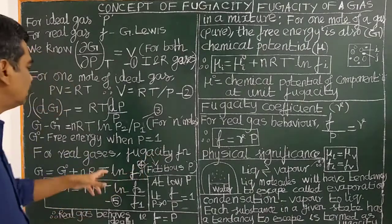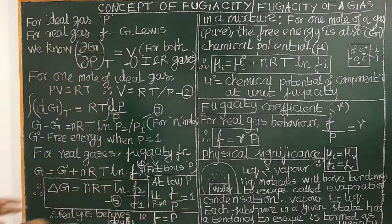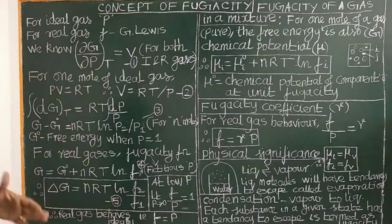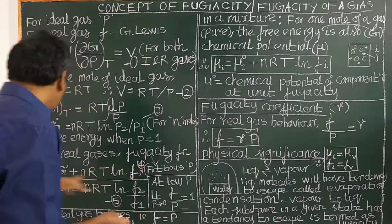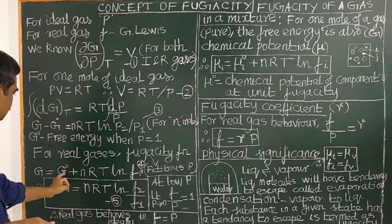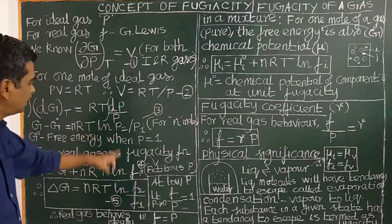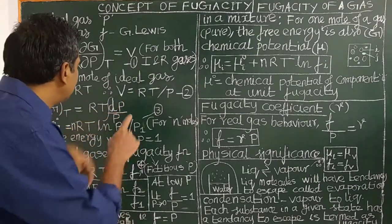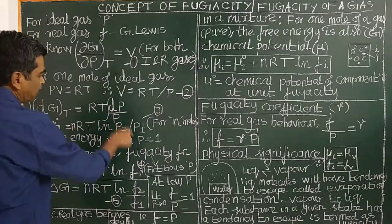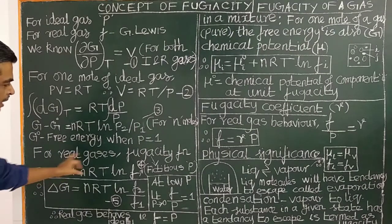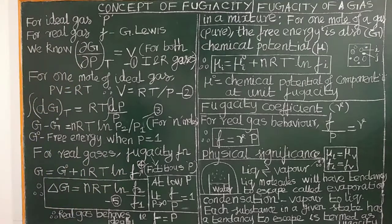For real gases, the fugacity function is used instead of pressure. G equals G° + RT · ln f, where ln P is replaced by ln f. This is the relation between the free energy change and the fugacity of the gaseous substance.